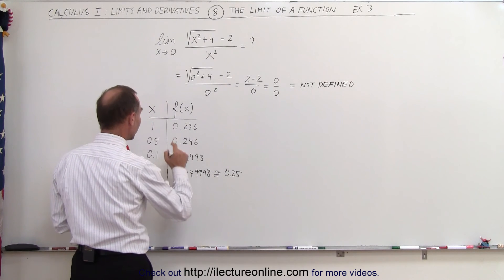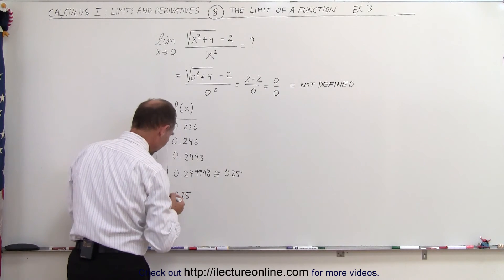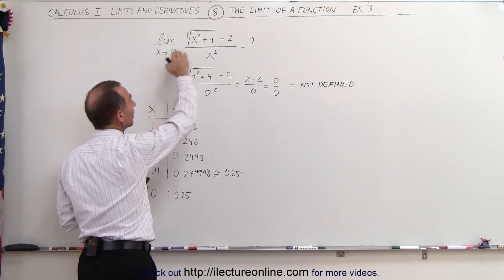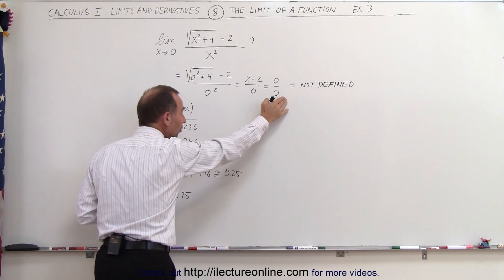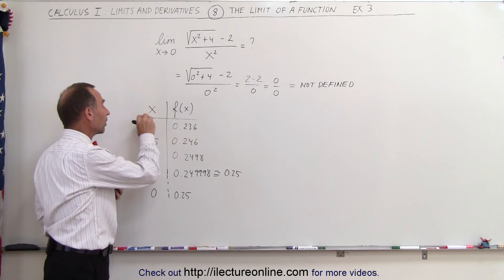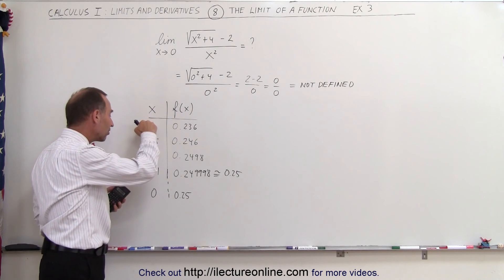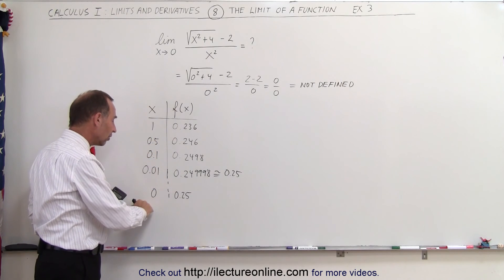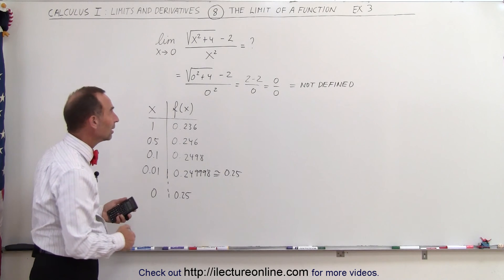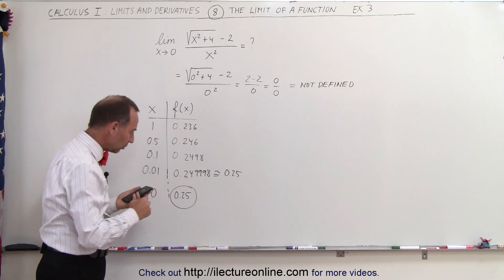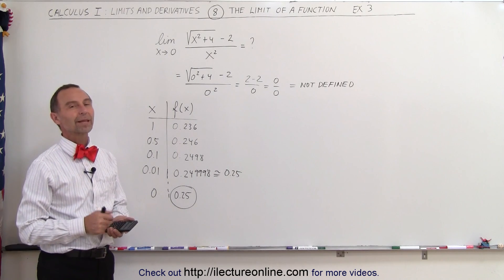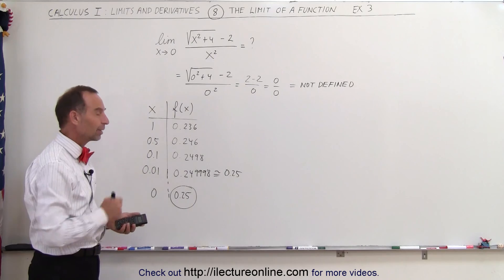So using the technique where we directly plug in the limit value into the function, we get an undetermined or non-defined expression, 0 divided by 0. But if I follow this technique where I plug in values for x and allow x to get closer and closer to 0 in the limit, we can see that the function then becomes 0.25. So the limit of the function as x approaches 0, the function is 0.25. And that's how we do that in this particular fashion.